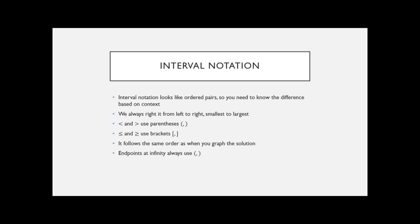Next is interval notation. What's tricky is that it often looks like ordered pairs. You have to know the difference in context: if you have X and Y, it's an ordered pair; if you only have X and you're doing inequalities or working with domain and range, it's interval notation. We always write it from left to right, smallest to largest, just like reading a graph.